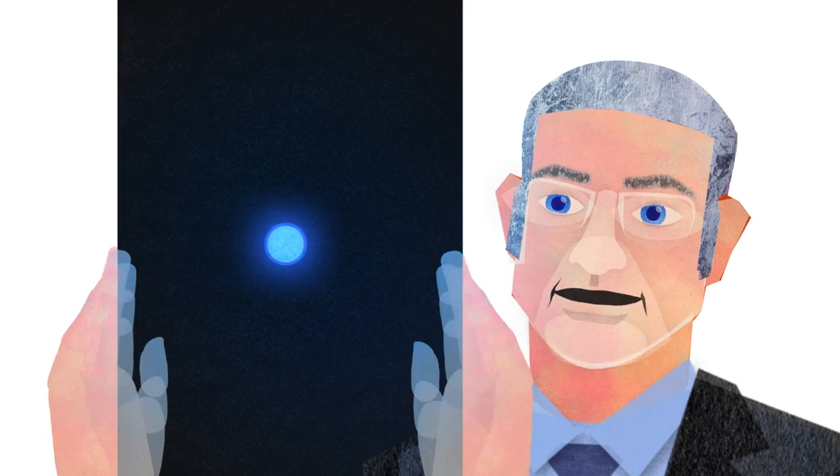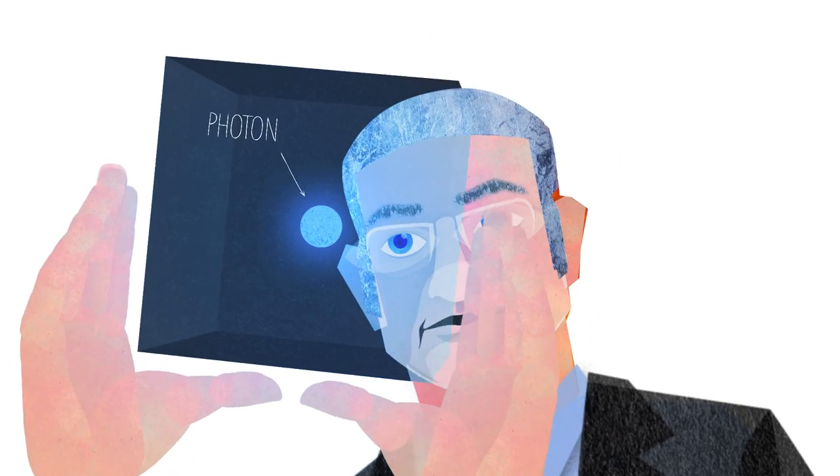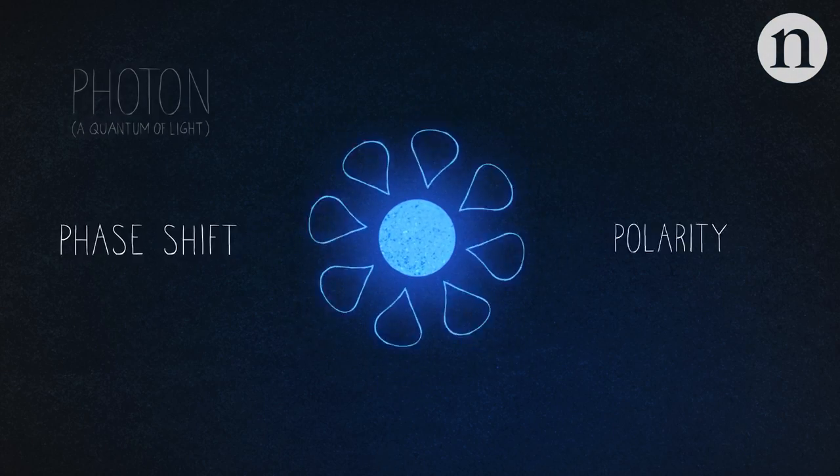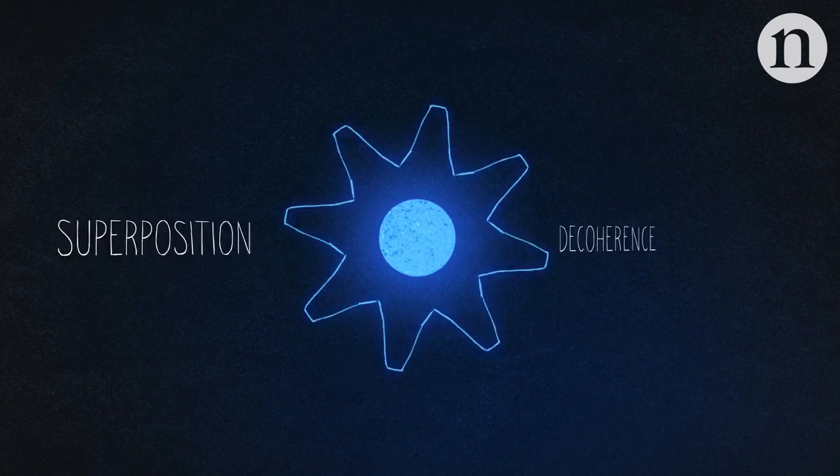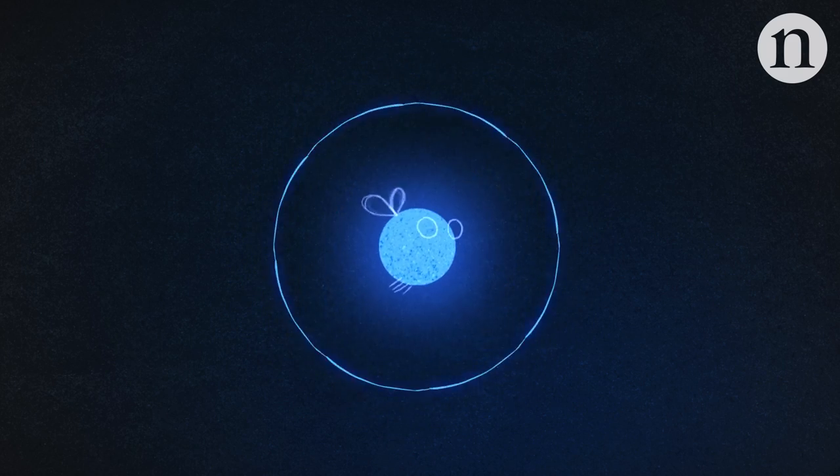So what we did was to trap photons in a box and manipulate and control these photons, which are the grain of light, to try to understand the deep properties of quantum systems and maybe to find ways to use these properties to do something useful in the end.